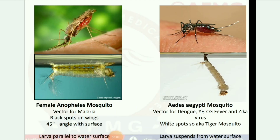Next image: female Anopheles mosquito — vector for malaria. Has black spots on wings, holds at a 45-degree angle with the surface, and larvae are parallel to the water surface.